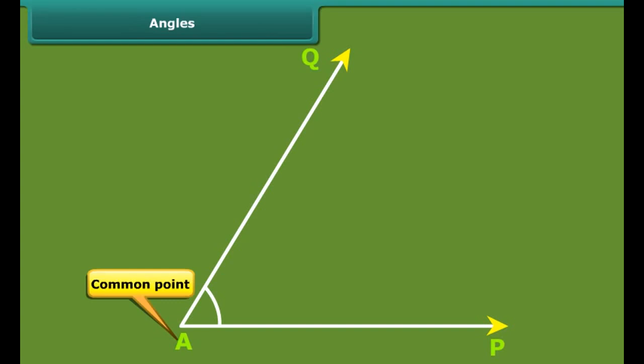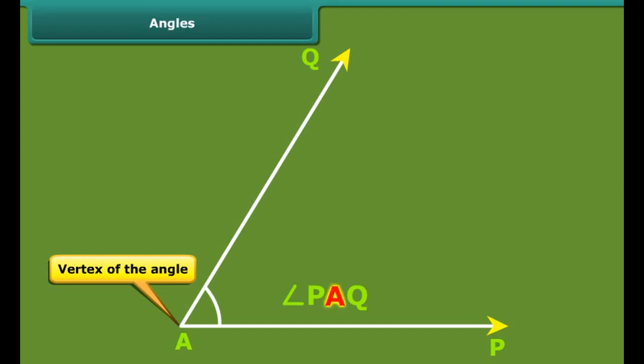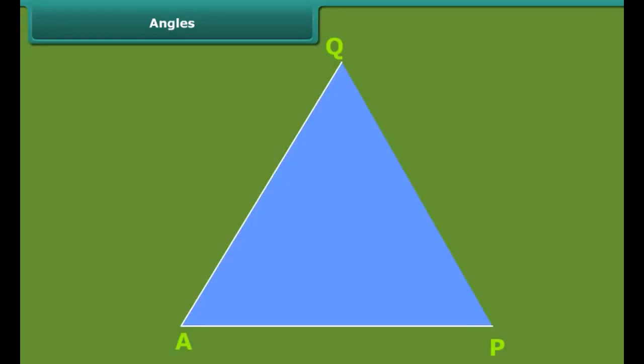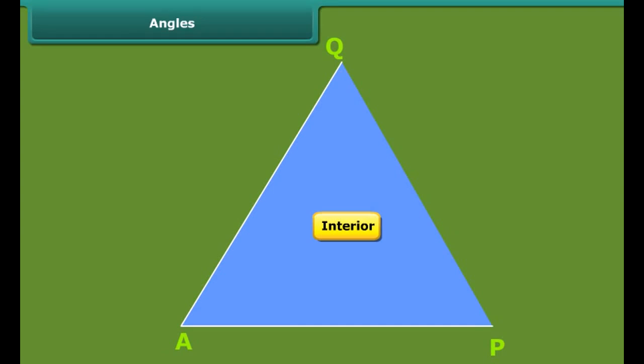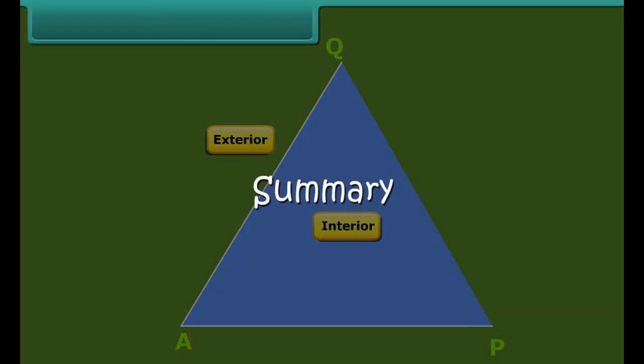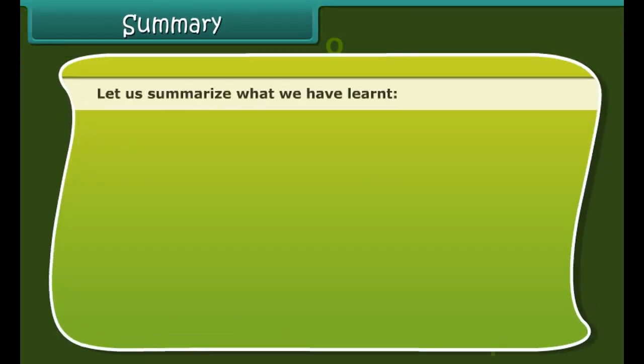Let us now move to another topic. The open door of almira or a box forms an angle. In language of mathematics, when two rays start from a common point, we say that an angle is formed. In the given angle, ray AP and AQ has a common point A. The two rays forming an angle are called the arms or sides of the angle. The common end point is the vertex of the angle.